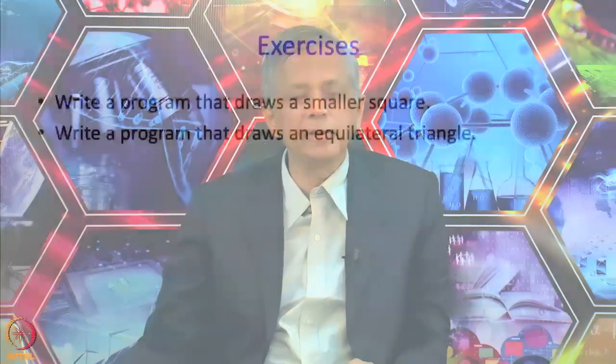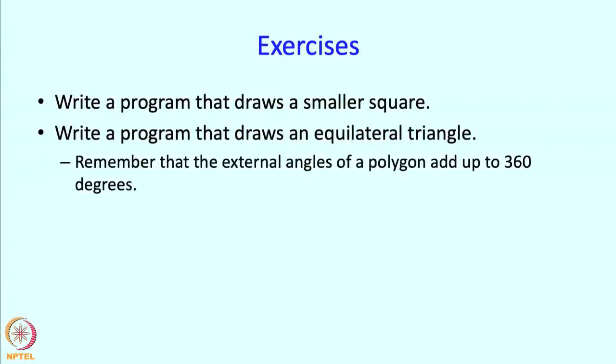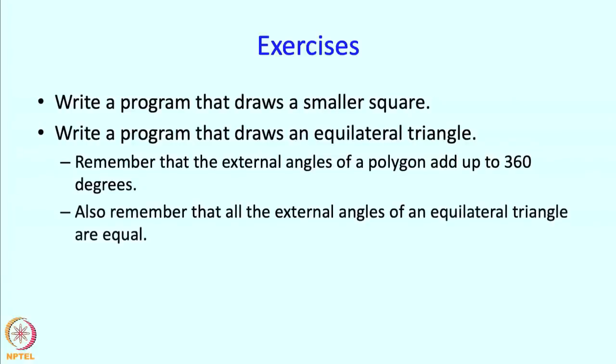Likewise, a slightly bigger change is to make it draw an equilateral triangle. Well, for an equilateral triangle you will just have to draw 3 lines instead of 4, and furthermore the angles will have to be different. For this purpose, remember that the external angles of a polygon add up to 360 degrees, and if the polygon is a triangle then there are only 3 angles and all of those exterior angles are equal. So therefore each angle must be 120 and that should be the turning angle.